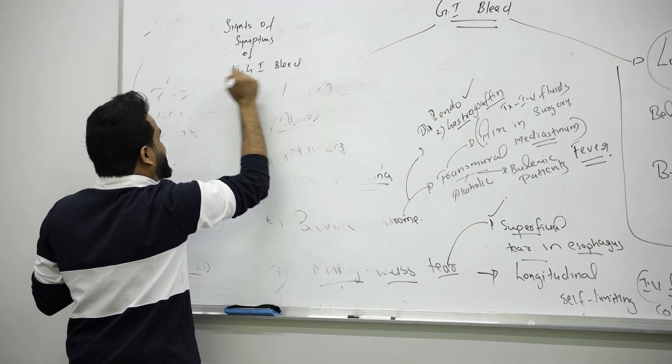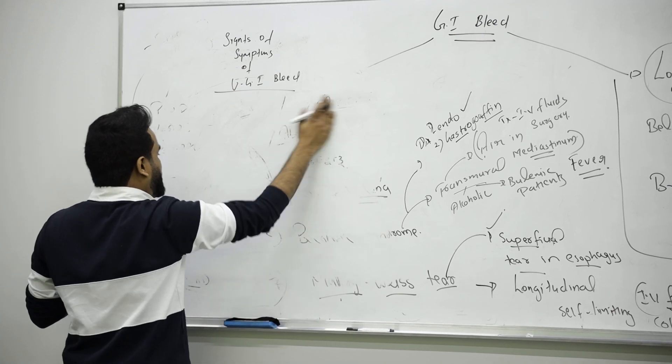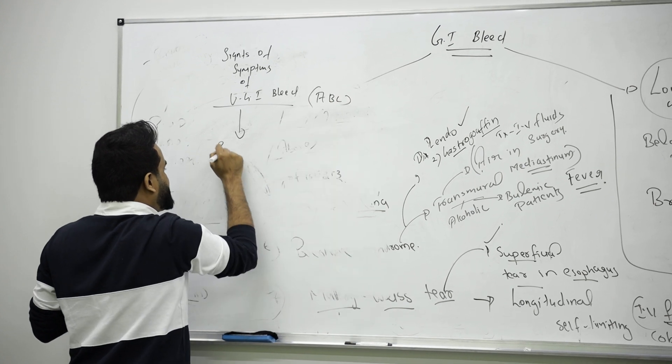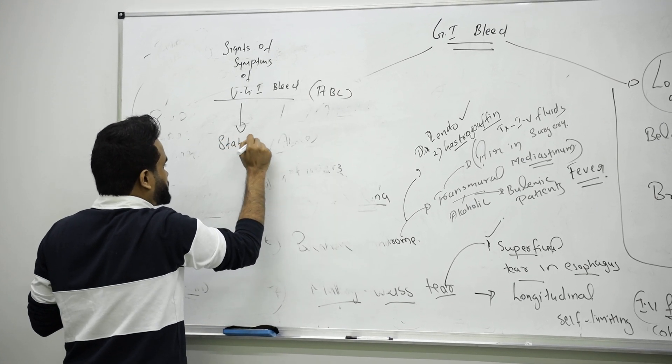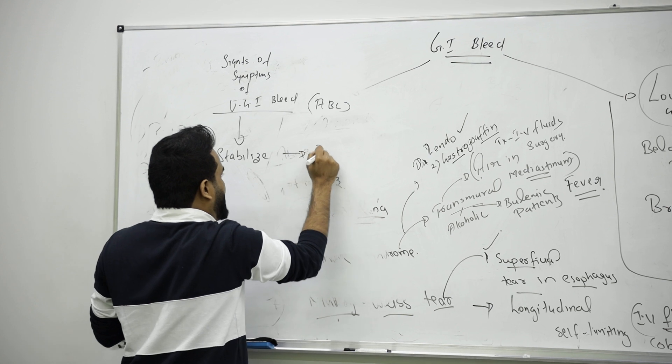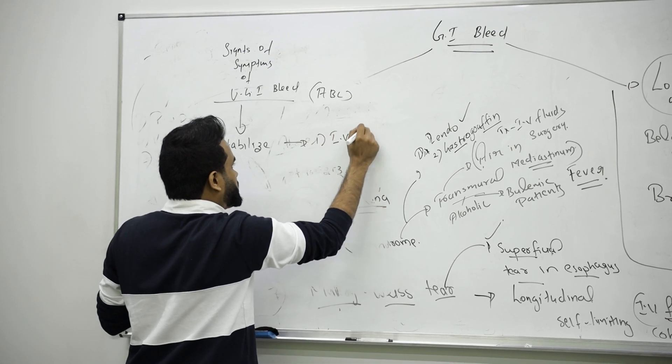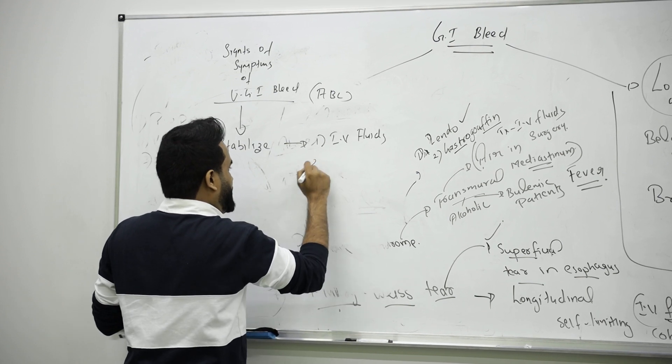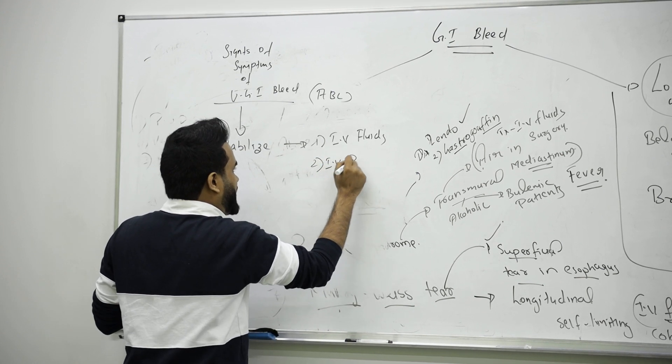If a patient comes with signs and symptoms of upper GI bleed, you are suspecting it as a doctor. First thing you are doing is, if someone has hypotension, you go for ABCs—airway, everything. First thing is stabilize the patient. For stabilizing, we will give IV fluids. You will give them IV PPI.